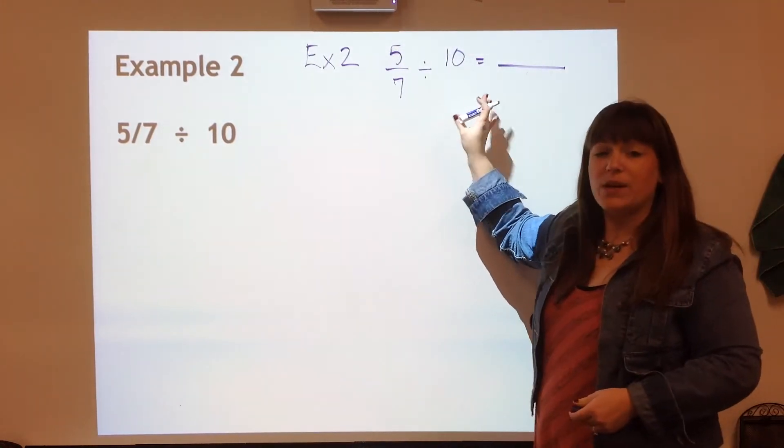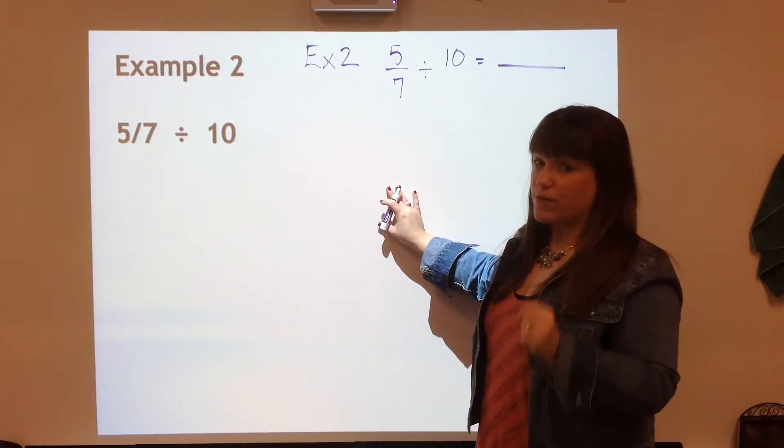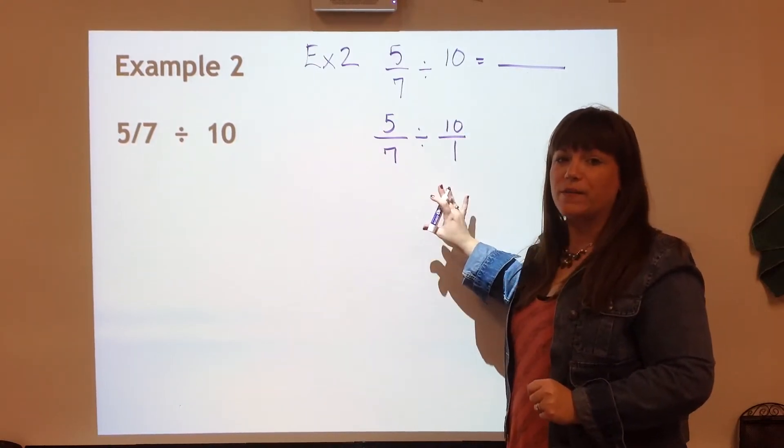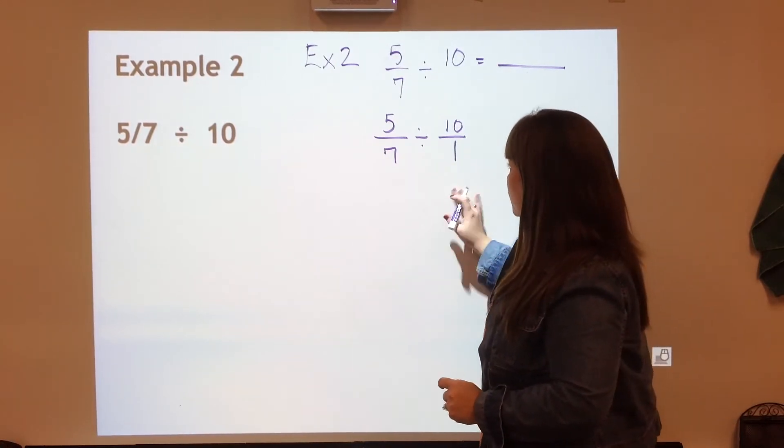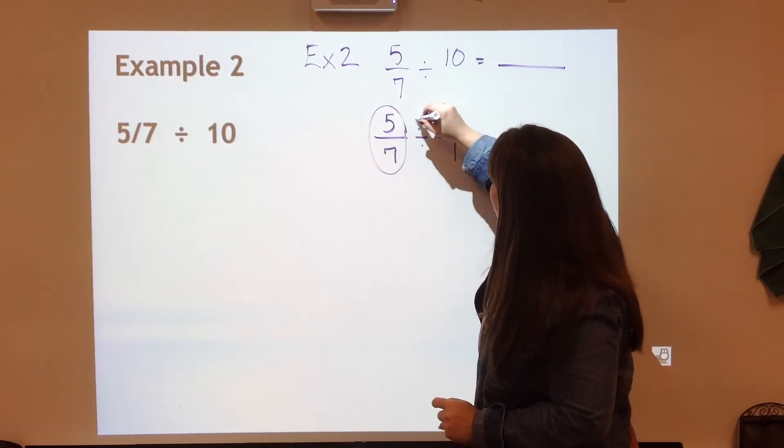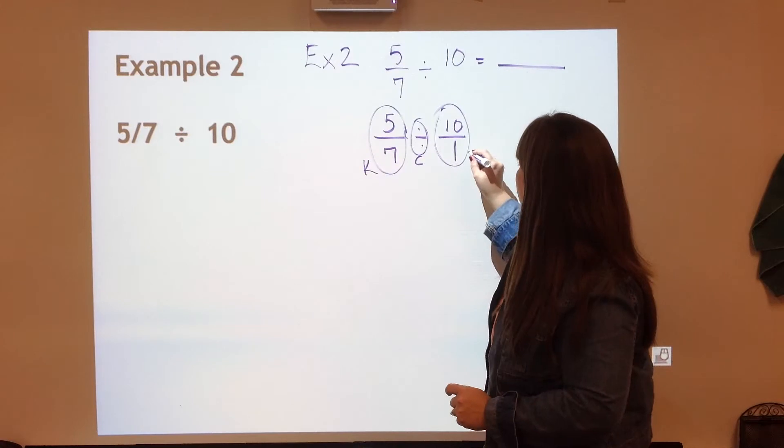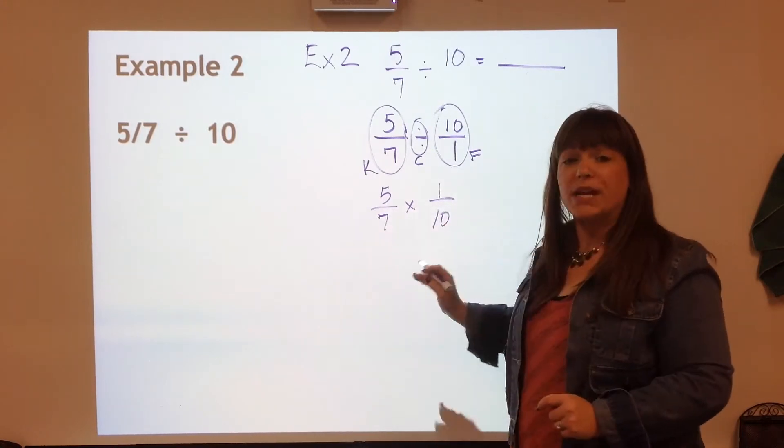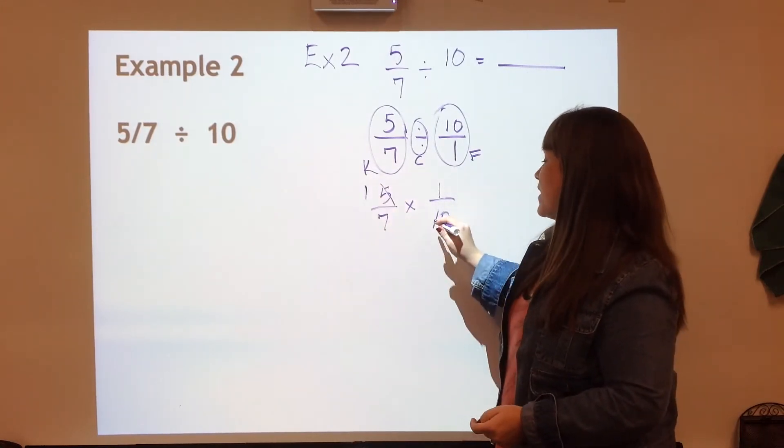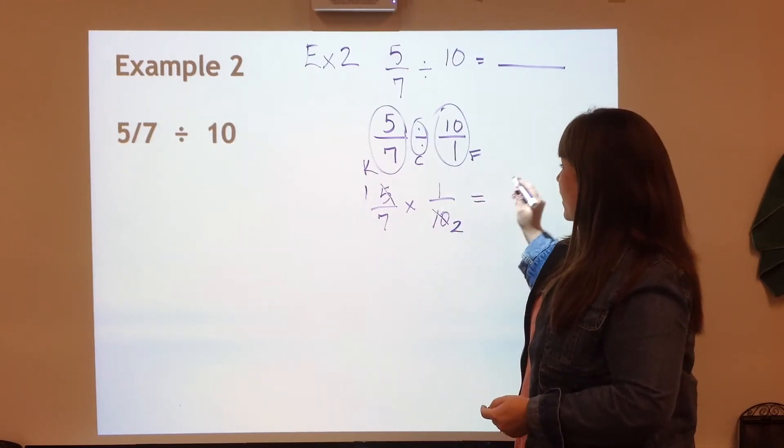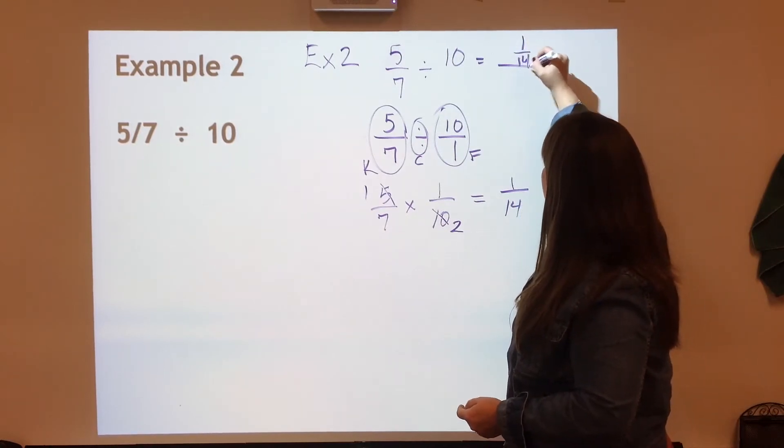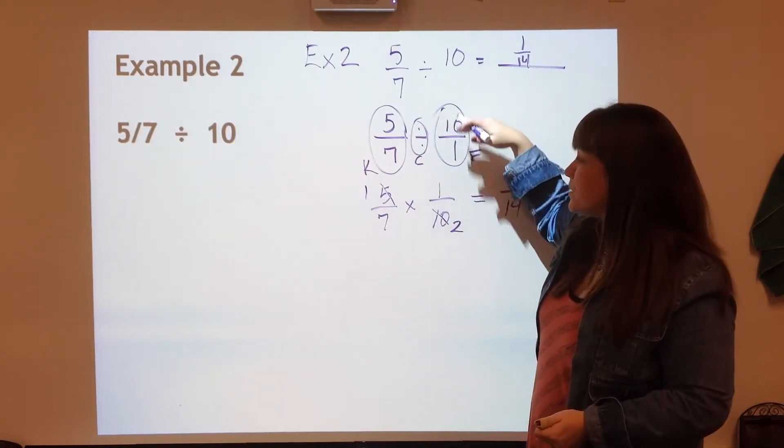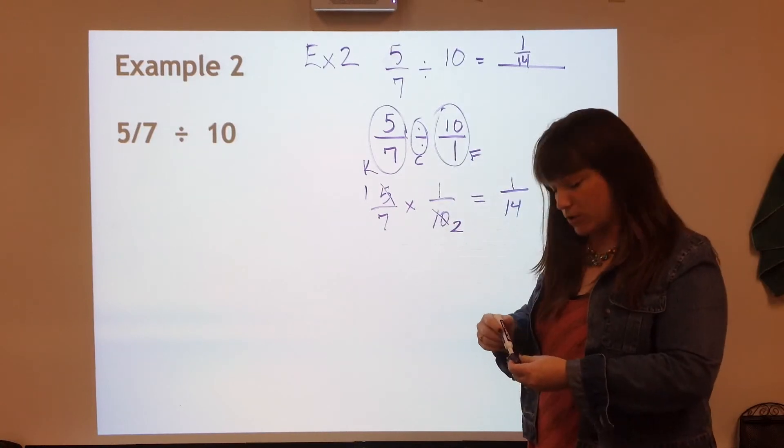Now we're going to rewrite the division problem with the division sign before we keep change flip. And that's important to do. I want you to put it over one first. Lots of people try to do this in their head and that's where errors start to happen. Now that we have two fractions, we can keep change flip. And we have 5/7 times 1/10. Here we can do the simplify first trick. So five divided by five is one, ten divided by five is two. And so now we have 1/14 as our answer. Really important that we don't keep change flip until we have two fractions.